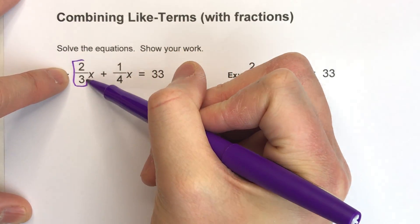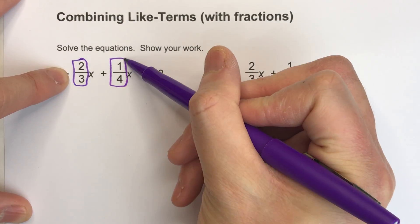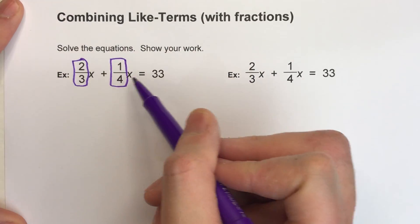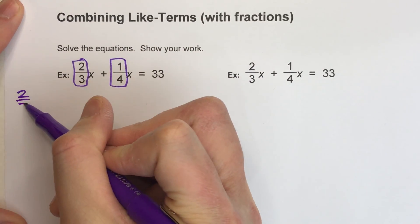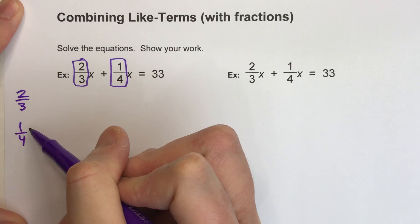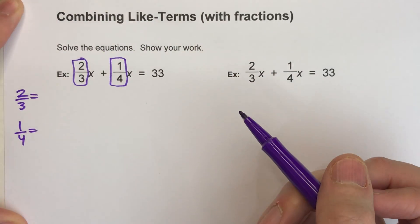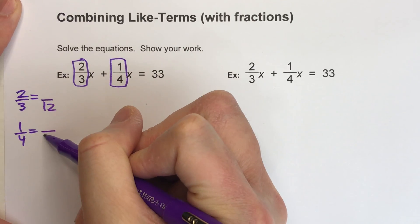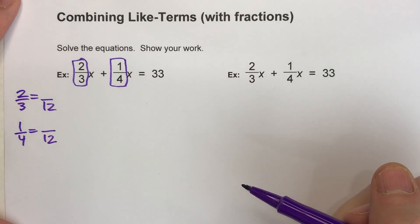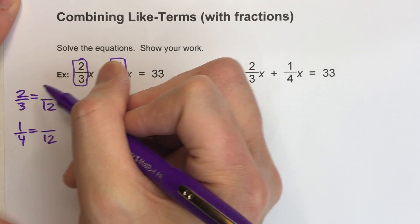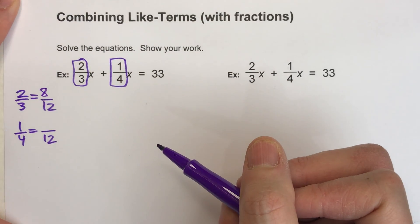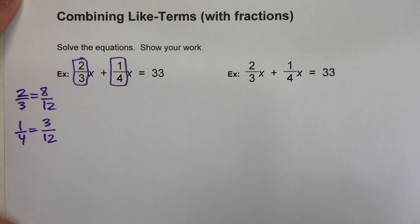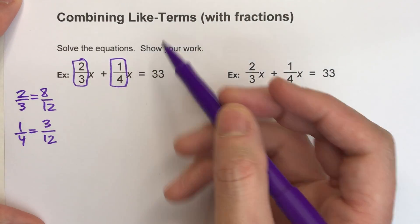But before we can add these fractions up, we always have to have a common denominator before we can add them. So my first step is to change the fractions so that they have a common denominator. Now, I know for 3 and 4, the common denominator is going to be 12. That's the least common denominator. 3 times 4 is 12, so 2 times 4 gets me to the top here, 8/12. 4 times 3 is 12, so 1 times 3 gets me to the top here.